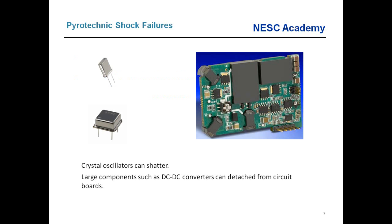What we're particularly concerned about is electronic circuit boards. On circuit boards there may be sensitive piece parts like crystal oscillators, which can shatter. Large components like DC-to-DC converters can actually detach from the circuit board as a result of shock response. We're concerned about failure of solder joints or lead wires. Pneumatic components, thrust vector control components, and others are also concerns. In fact, there are so many different types of charges on a launch vehicle that some charges have to withstand shock events from other charges as well.